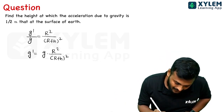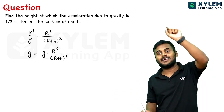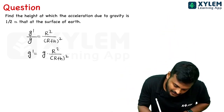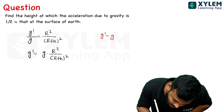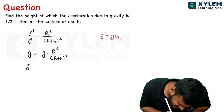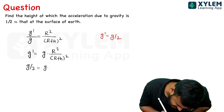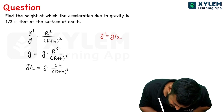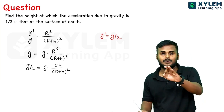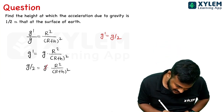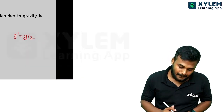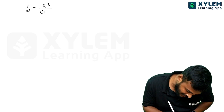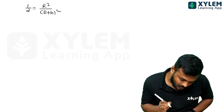We will rearrange this. g' divided by g is equal to R square divided by R plus H whole square. Since g' is equal to g by 2, we substitute: g by 2 equal to g into R square divided by R plus H whole square.